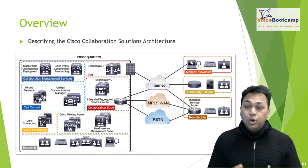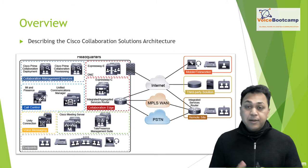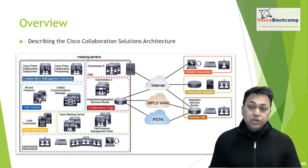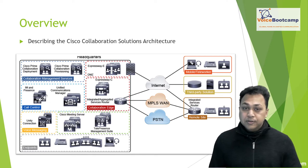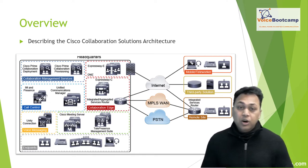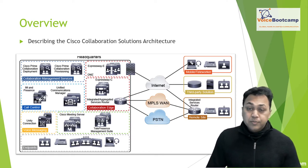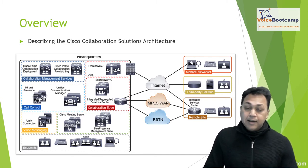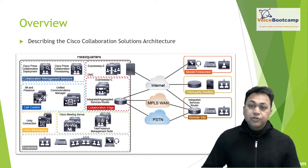We will then turn our attention to the heart of the collaboration system, which is the dial plan — including endpoint addressing, call routing, route selection, digit manipulation, and calling privileges. We're going to wrap up this section by discussing network protocols and codecs that are going to be used, what protocols are required for various requirements, and how existing network protocols can be used to fulfill your collaboration solution.